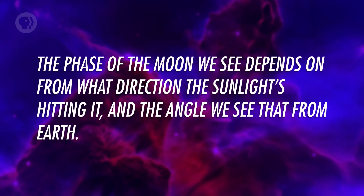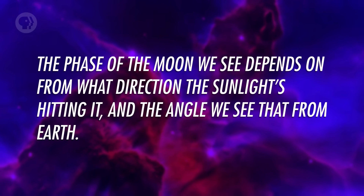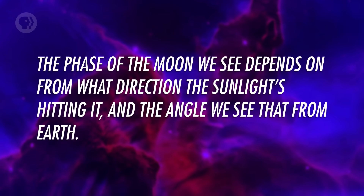If you're facing the Moon with the Sun behind you, you're seeing the half of the Moon that is fully illuminated by sunlight, and it looks full. If you're off to the side, you see half of the lit side and half of the dark side, and we say the Moon is half full. If the Sun is on the other side of the Moon, you're looking at the unlit half, and it looks dark. The Moon is always half-lit and half-dark. The phase of the Moon we see depends on from what direction the sunlight's hitting it, and the angle we see that from Earth.